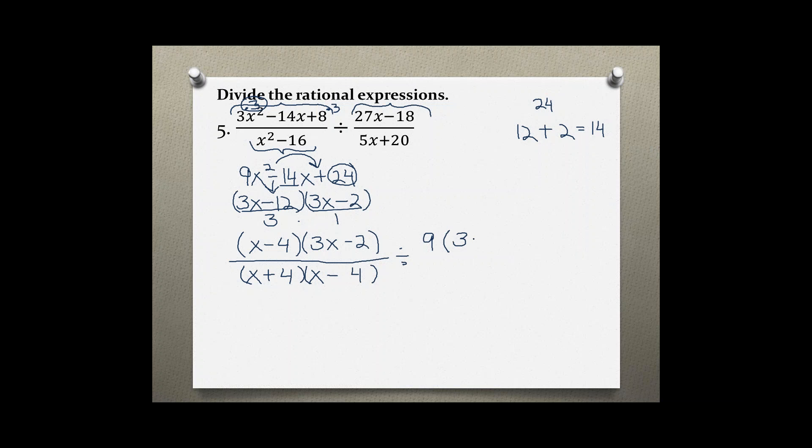Then the bottom one, 5x plus 20, also shares a common factor, which is five. Pulling out the five, I'm left with (x plus 4).